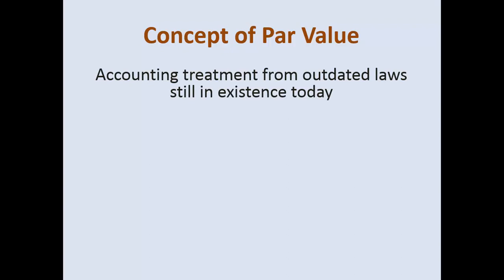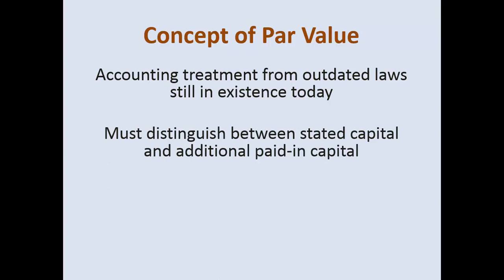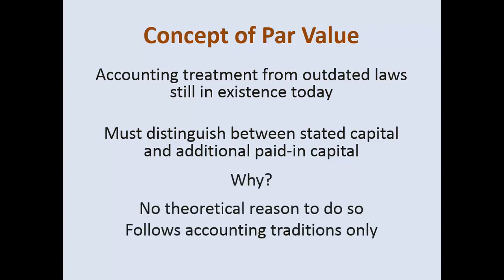The accounting treatment is from outdated laws still in existence today, but you must distinguish between the stated capital and additional paid-in capital. So let's say the par value is a penny and I sell a share of stock for a dollar. That means I record my common stock at its par value — a penny — and then I have another account called paid-in capital excess of par, where I record the difference, that 99 cents per share. It is a silly rule, but it is more of accounting tradition from about 100 years ago. There really is no theoretical reason to do so; it just follows accounting tradition only, and no one has changed it yet.